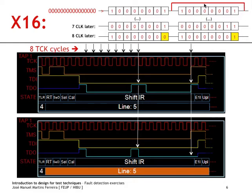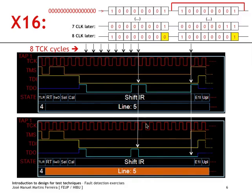Because of the short circuit, this zero will overdrive the 1. What happens is that on clock cycle number 9, if the fault is present, the 1 will be overridden to 0 and the fault will be detected.